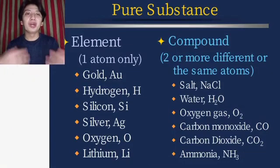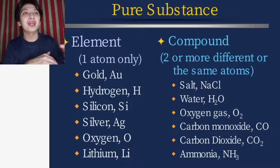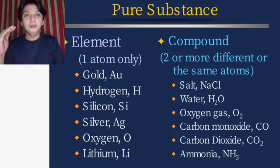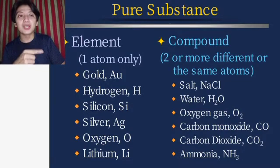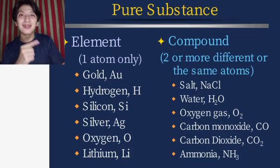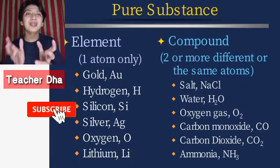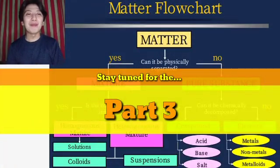To sum up: an element is composed of only one kind of atom, while a compound is composed of two or more atoms (same or different). Examples of elements include gold (Au), hydrogen (H), silicon (Si), silver (Ag), oxygen (O), and lithium (Li). Examples of compounds include salt (NaCl), water (H₂O), carbon monoxide (CO), carbon dioxide (CO₂), and ammonia (NH₃). These are the pure substances.